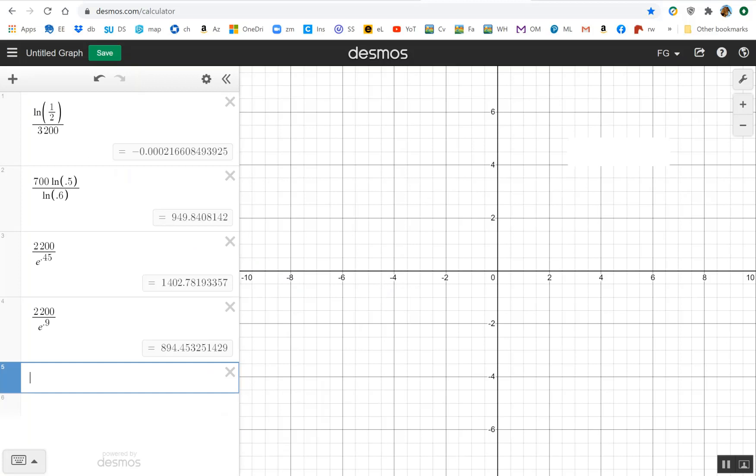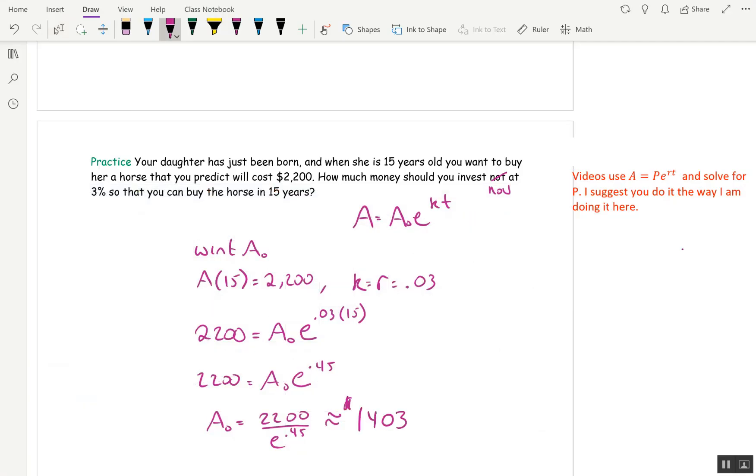And I got, if we round to one, if we round up and we go to the nearest dollar, that would be $1,403. That's a lot of money to invest right now so that you'll have $2,200 in 15 years. When I initially did this problem, I had this at 6%, 6%. And if you do it with 6%, then everything's the same, except 0.06 times 15 is 0.9.